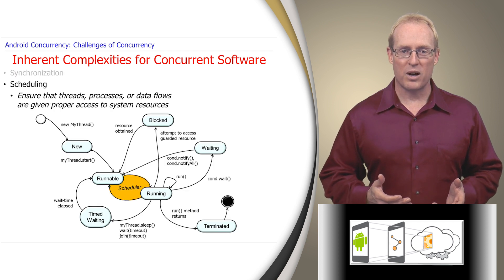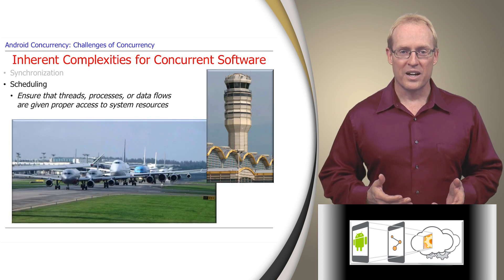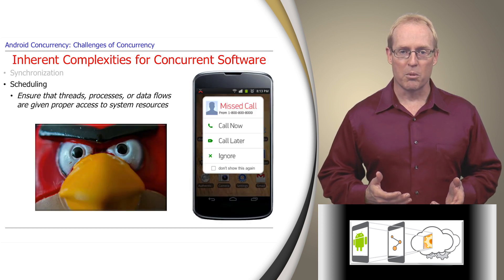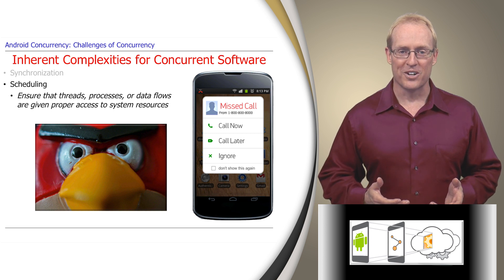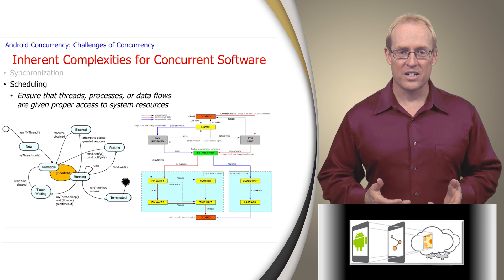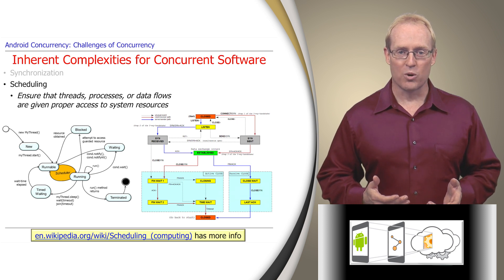Scheduling ensures that threads, processes, or data flows are given proper access to system resources. For example, air traffic controllers need to schedule the arrival and departures of airplanes based on limited resources, such as gates and runways. Likewise, Android's scheduler must ensure that an emergency call isn't missed just because the user is playing the Angry Birds game on the phone. Getting all this right is hard, since there are many states to manage in concurrent programs, and it's hard to keep track of them all to ensure that the software does the right thing under both expected and unexpected conditions. This link contains more information on scheduling.